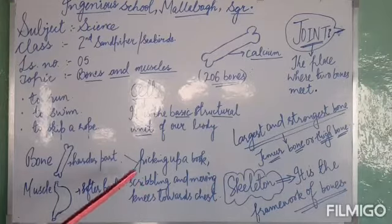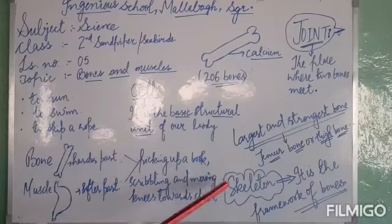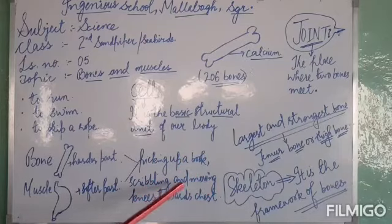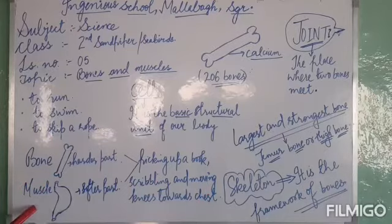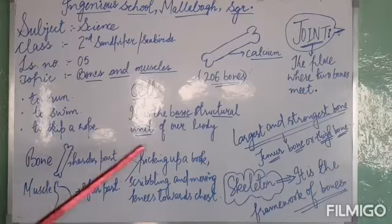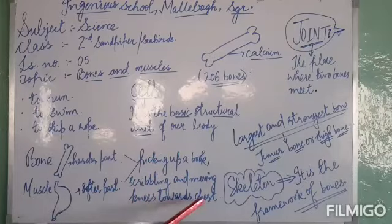Bones and muscles help us to do different tasks like picking up a book, scribbling, and moving our knees towards the chest.